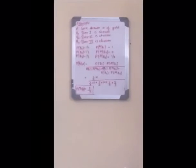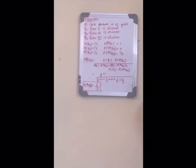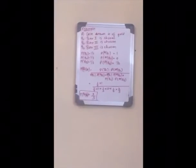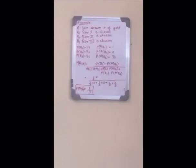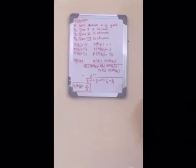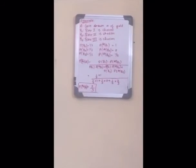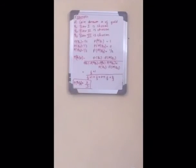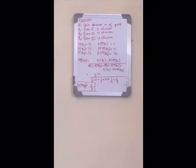The solution is: Event A — the coin drawn is of gold. Event B1 — box 1 is chosen. Event B2 — box 2 is chosen. Event B3 — box 3 is chosen. As the boxes are selected at random, the probability of each box P(B1), P(B2), and P(B3) will be 1/3. In box 1, both coins are gold, so P(A|B1) = 1. As there are no gold coins in box 2, P(A|B2) = 0. In box 3, there is one silver and one gold coin, so P(A|B3) = 1/2.